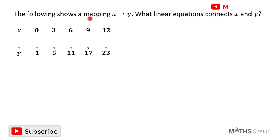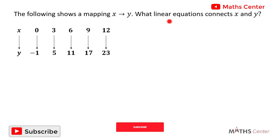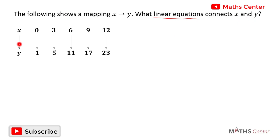The following shows a mapping of x to y. What linear equation connects x and y? We can verify that it's a linear mapping because when you find the difference between the x values they are all the same, and when you find the difference between the y values they are all the same. So this is a linear mapping.